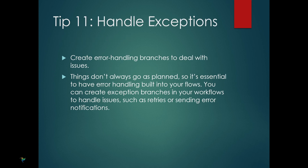When working with automation, things don't always go as planned. That's why it's essential to have error handling built into your workflows. Power Automate allows you to create error handling branches or exception paths which can manage issues like retries or sending notifications when something goes wrong. If a task fails to execute properly, the error branch can automatically retry the action or send an alert so you can address the issue immediately, ensuring greater reliability and efficiency in your automated processes.